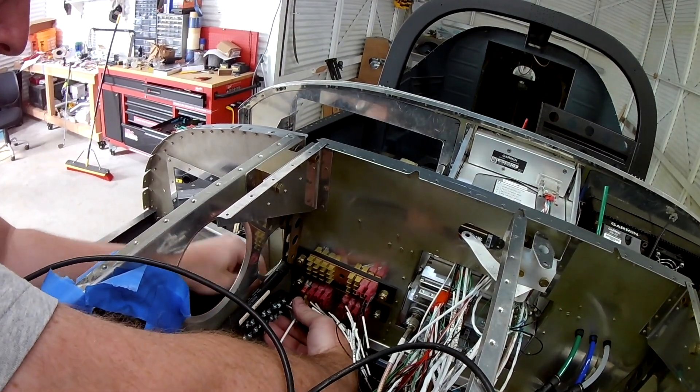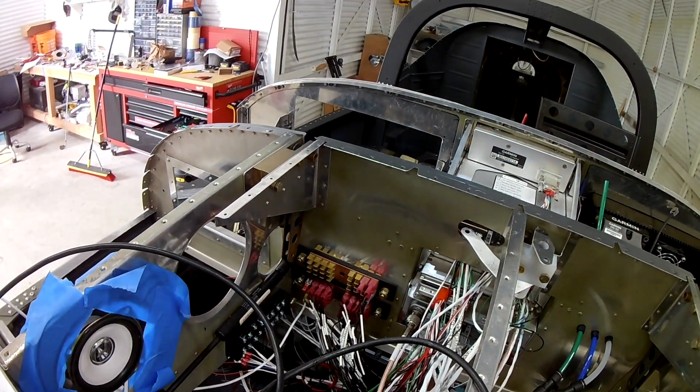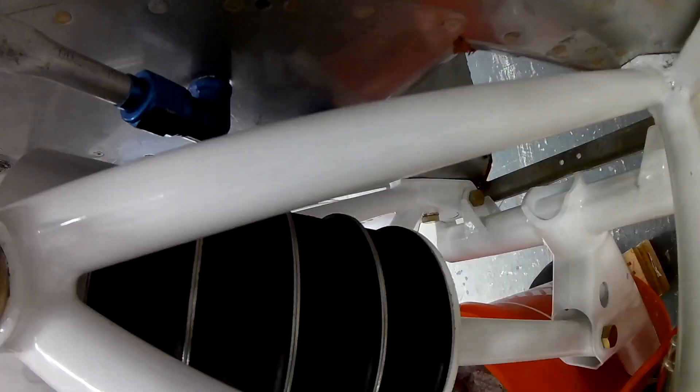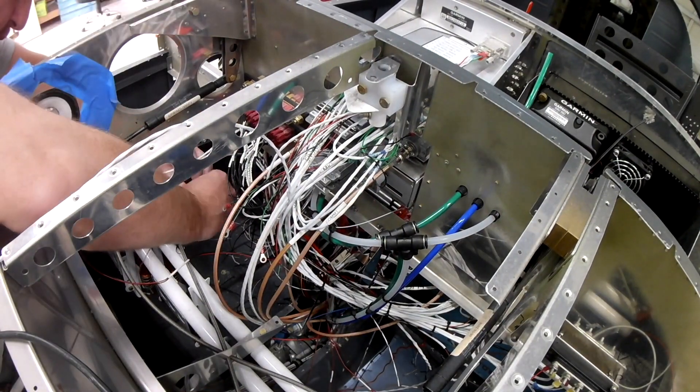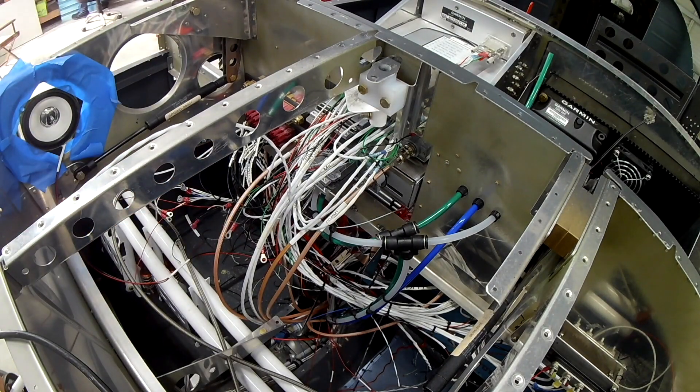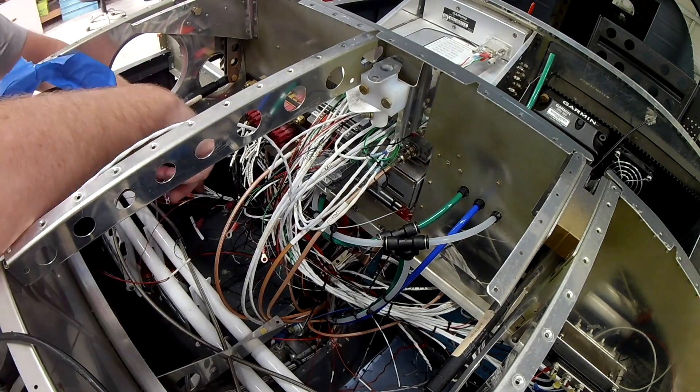And provide power for all of the switches underneath the pilot. So like all the lights, strobes, navs, landing, taxi. Not fuel pumps, but like the pitot heat, that'll be there. The defrost fans, that'll be there. So I have to have a big old bus. And I'm going to put that on the right side.